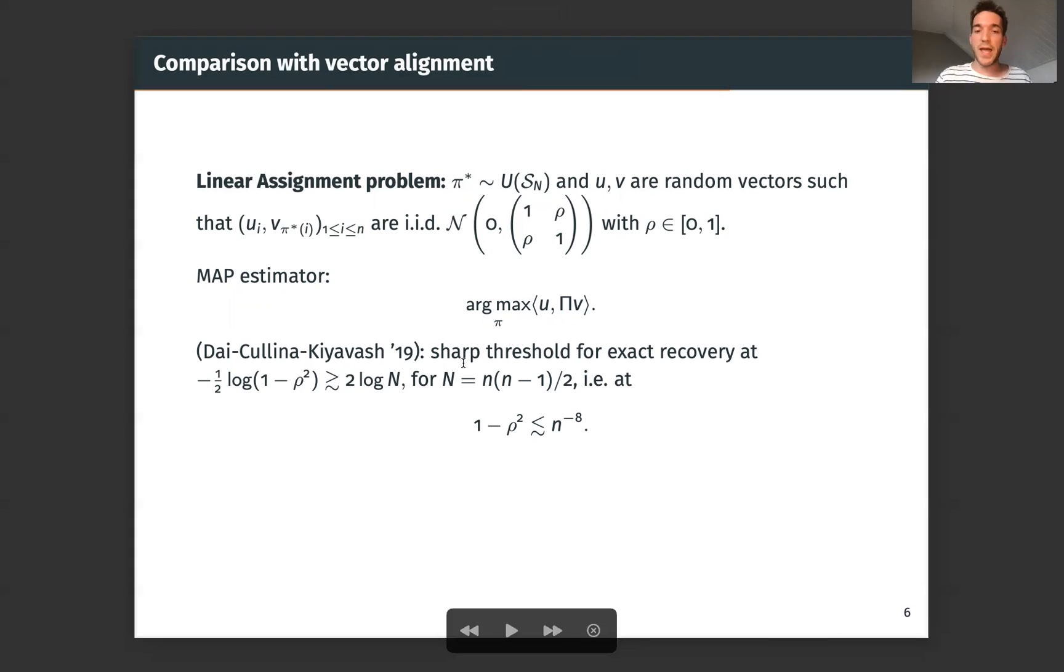And this problem was, this planted version has also been studied recently, and it is shown that there exists a sharp threshold for exact recovery. If we take big N to be the size of our matrices, the number of edges of our graphs, we end up with a threshold of the following form. 1 - ρ² is less or equal to N^(-8). So we see that the threshold is completely different. And solving this quadratic assignment problem is really different from solving a linear assignment problem. You see that the structure in the matrices is very important. And that's why we can allow ρ for instance to tend to zero.